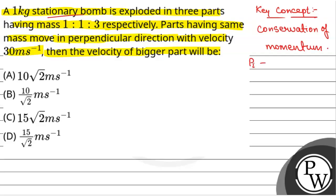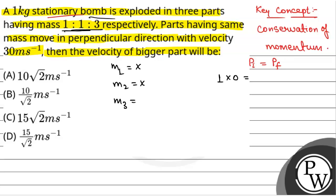So initial momentum p_i will be equal to final momentum. The initial momentum will be equal to 1 × 0 because the velocity of the bomb initially was 0. The final masses of the parts are: let us call m1 as x, m2 as x, and m3 as 3x, because the mass of the parts are in the ratio 1:1:3.